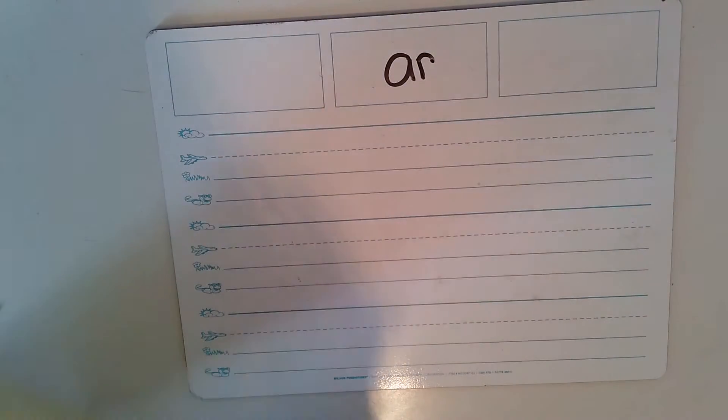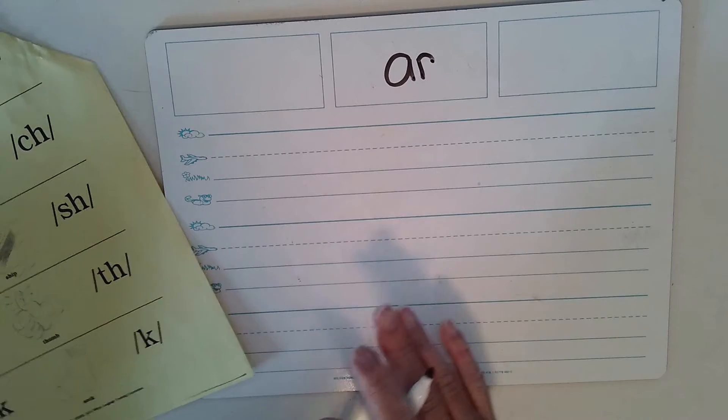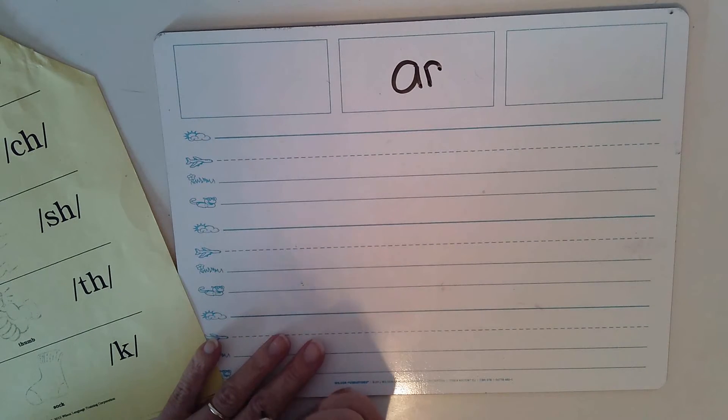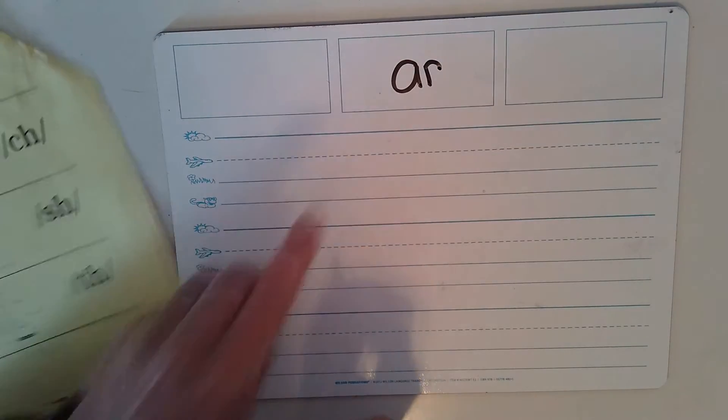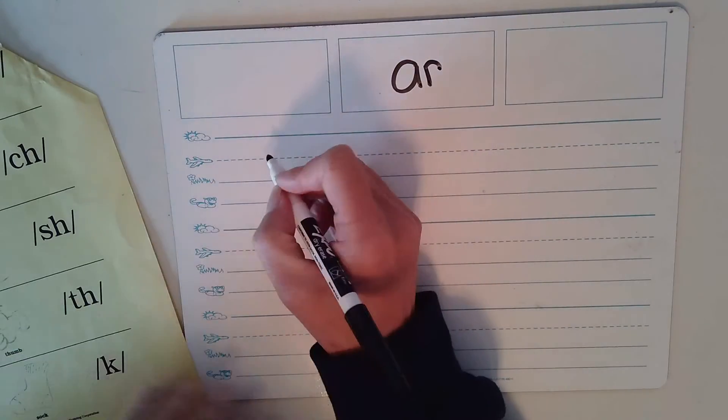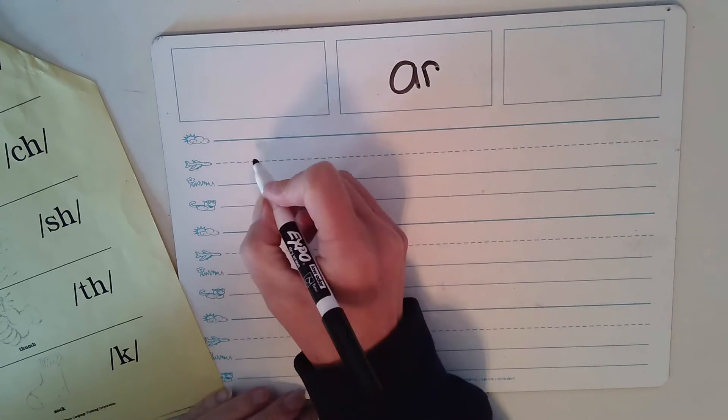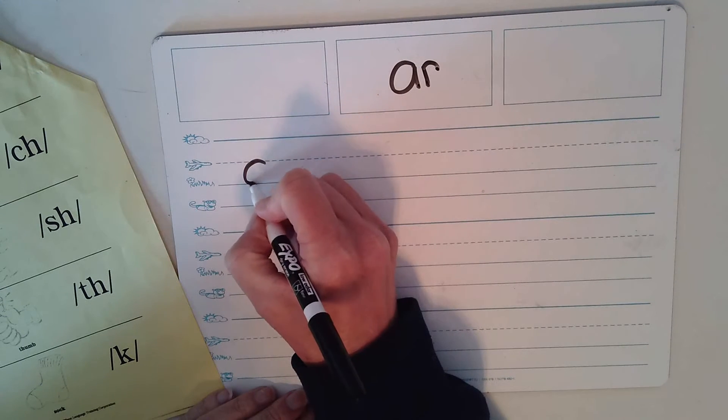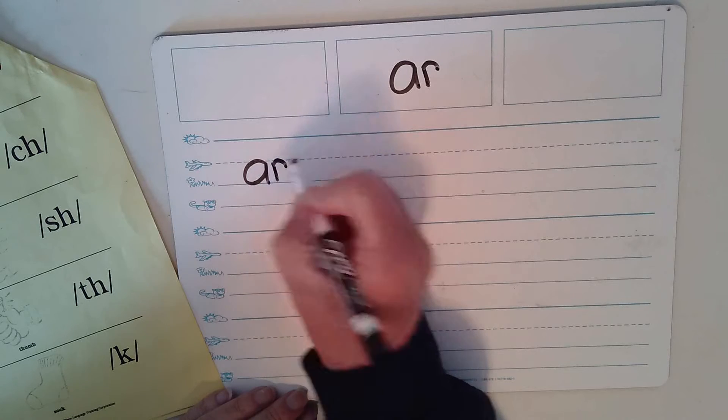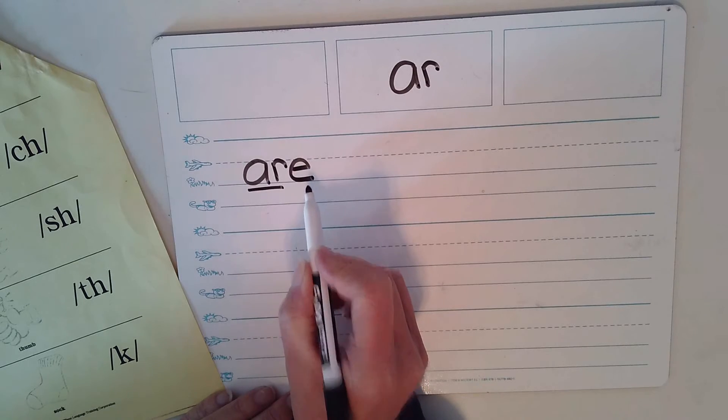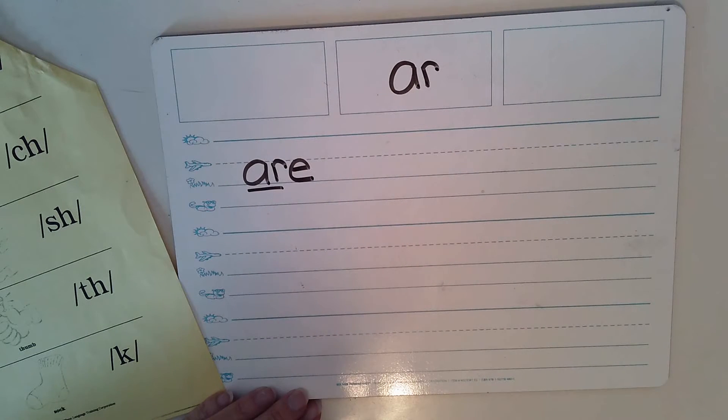So the first word I'm going to give you is the word are. You are in first grade. So I know that it has the AR sound. Can you write the word are? The word are has AR and then it has an E on the end that we don't hear. Good job.